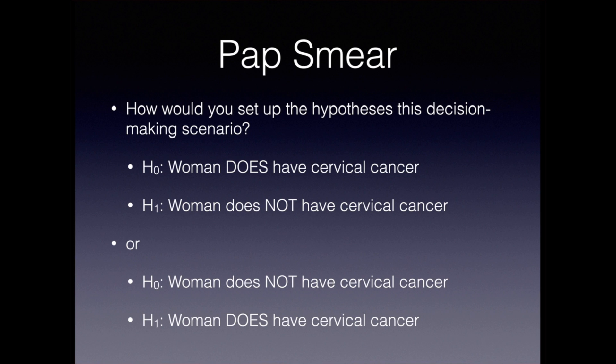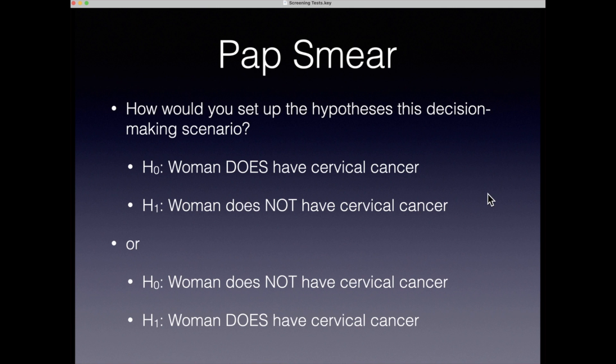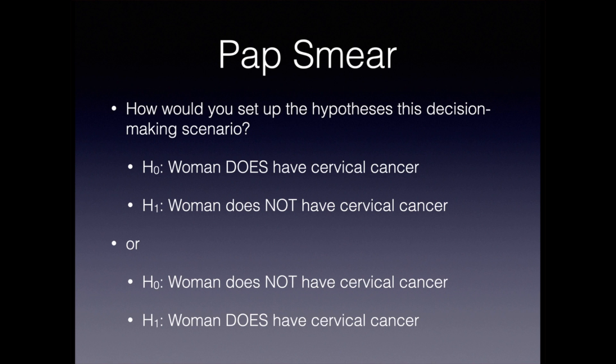There are two ways we could set up the hypotheses for this decision-making scenario. The first would be to assume as the null hypothesis that the woman does have cervical cancer, and then the alternative would be the opposite — that the woman does not have cervical cancer.